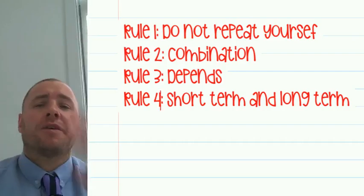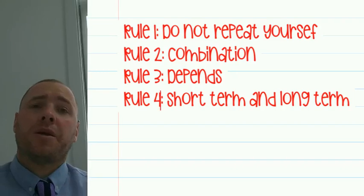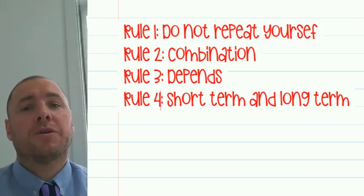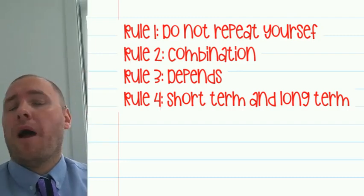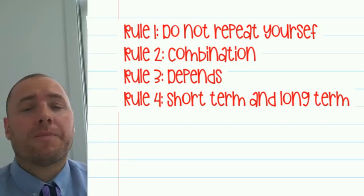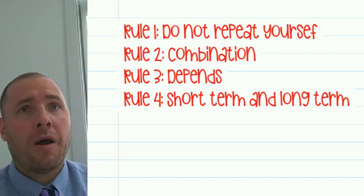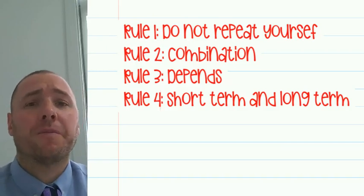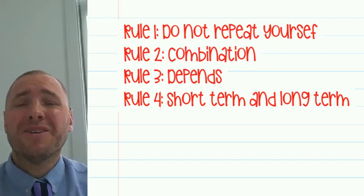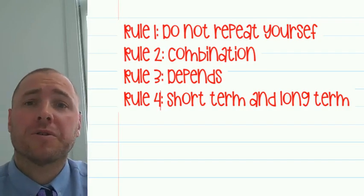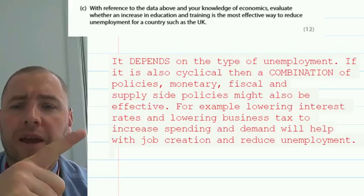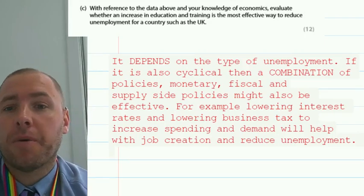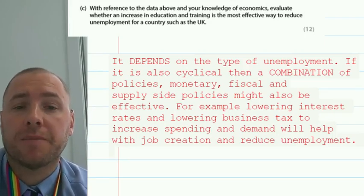Number four: you can talk about the short term and long term. For instance, in the long term education and training will be effective, but we know from analysis that it takes a long time to impact. So in the short term, demand-side policies — lowering business taxes, lowering income tax, increasing the national minimum wage — might be more effective to increase the supply of labour or provide more incentive for people to work, thus reducing the unemployment rate. So there we have a short-term and long-term approach.